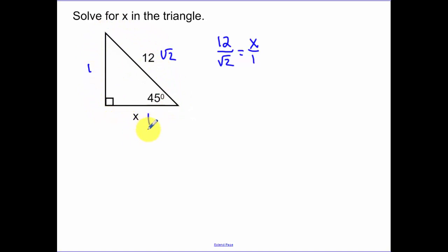All 45, 45, 90 triangles are similar because of angle, angle. So therefore, I know that these sides are all going to be in the same proportion. So I set up my proportion. So x is equal to 12 over root 2. I need to simplify my radical, so I multiply by root 2 over root 2. That gets me 12 root 2 over 2. 12 over 2 cancels to be 6 root 2.